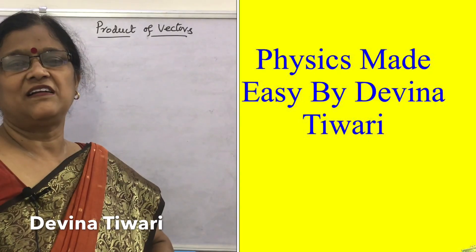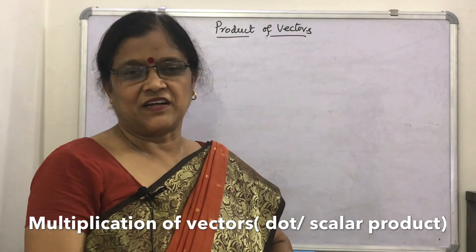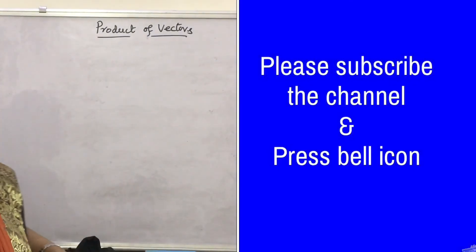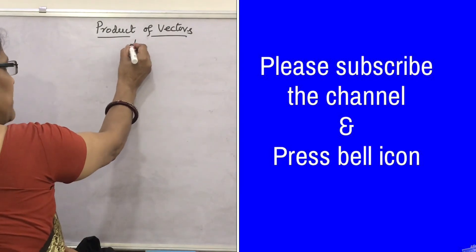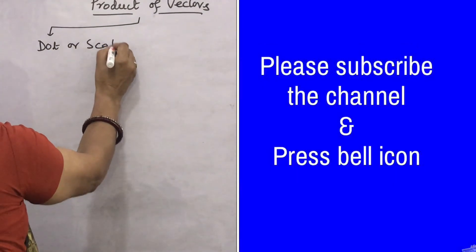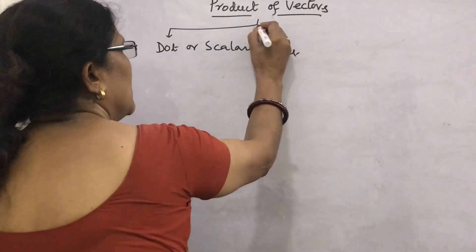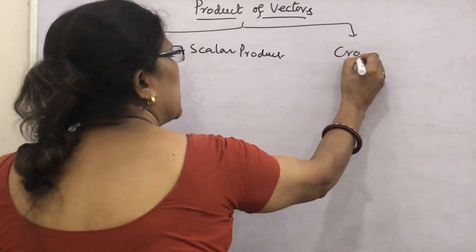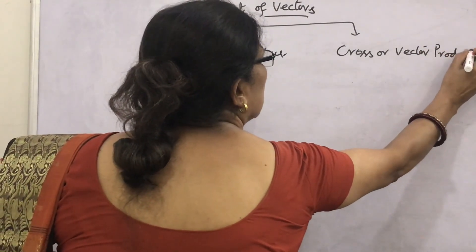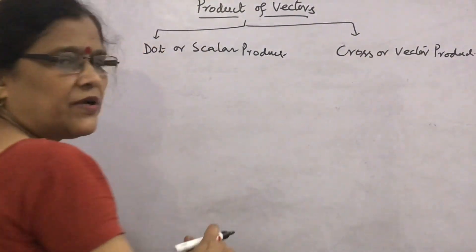Welcome class 11. We have read about vector addition and subtraction. Now it is the turn to read about product of vectors, that is vector multiplication. Vectors are multiplied by two ways: first is called dot or scalar product, and the other one is cross or vector product. Number one: dot or scalar product; second: cross or vector product.